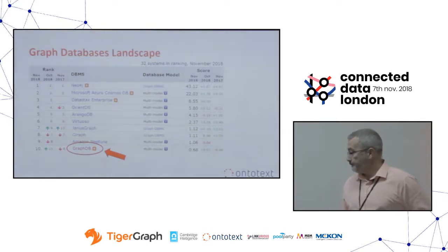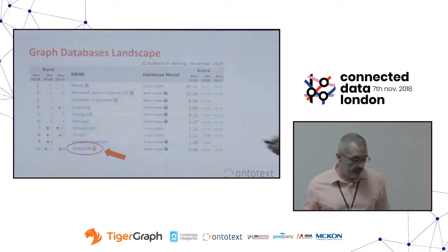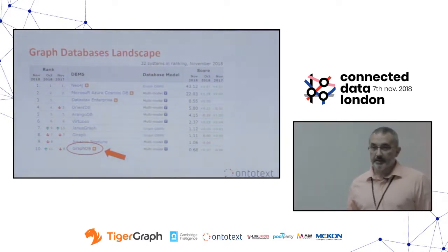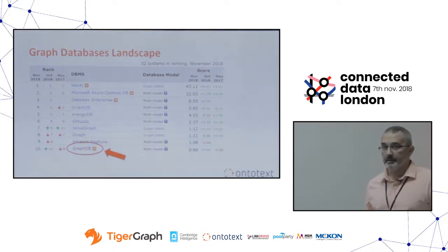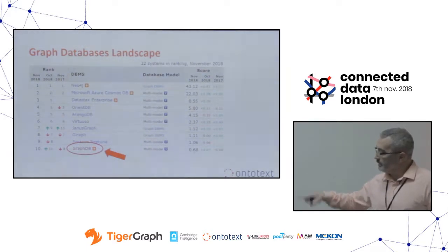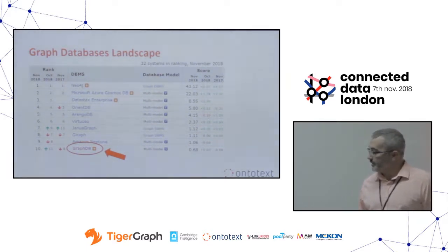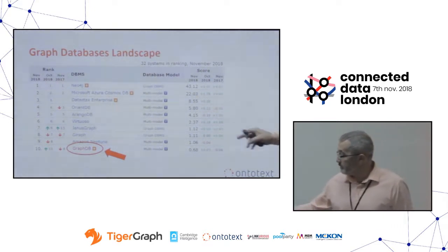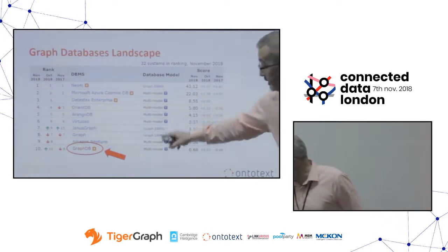We are best known for our database engine — it's called GraphDB. In the top graph databases ranking, very few are triple stores — probably only Virtuoso and ourselves.